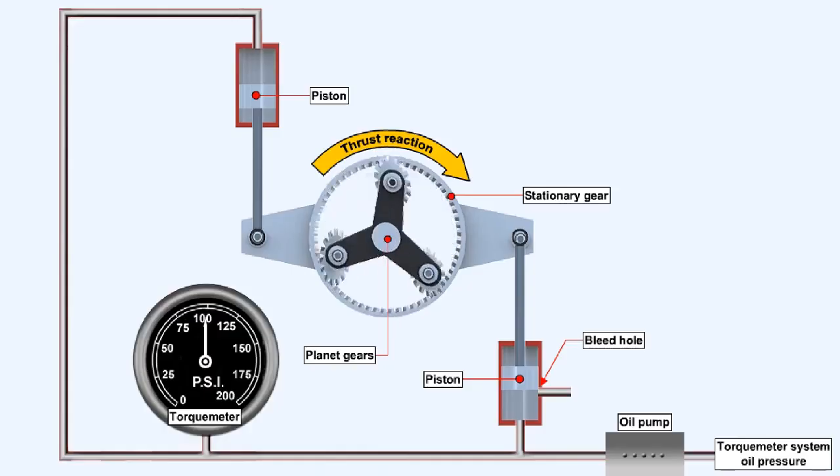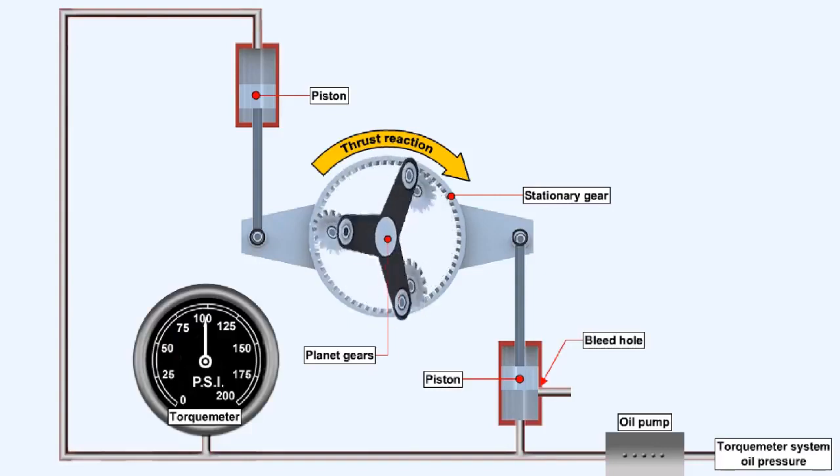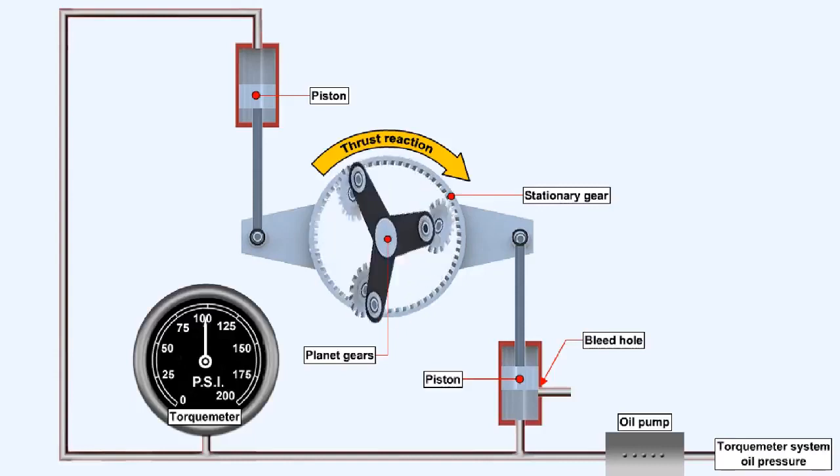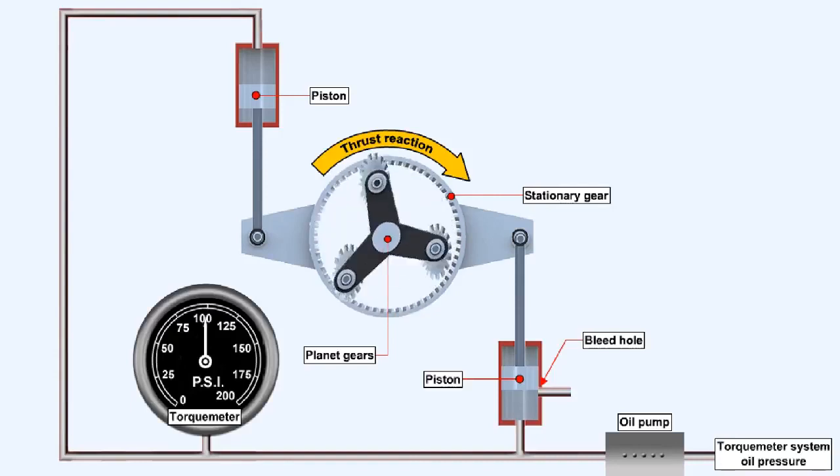When the engine is running, the pinions or planet gears are being driven around inside the stationary gear by the central engine crankshaft. The thrust reaction generated by the rotation of the pinions will try to rotate the stationary gear in the opposite direction to that of the pinions. The stationary gear is restrained by being attached to pistons, fitted within cylinders that are being supplied by oil pressure, which is generated by a torque meter system pump.